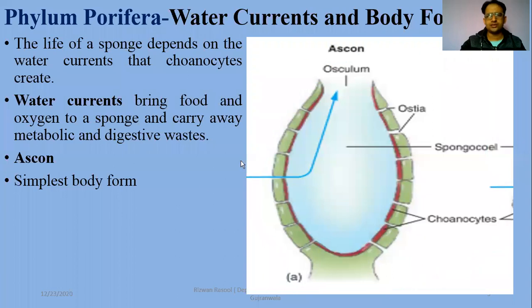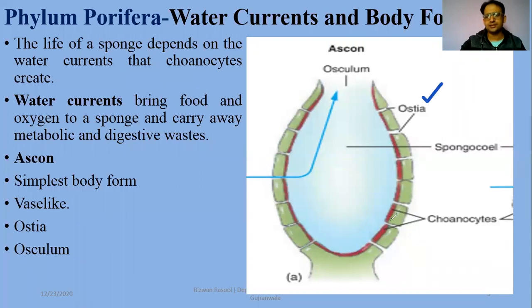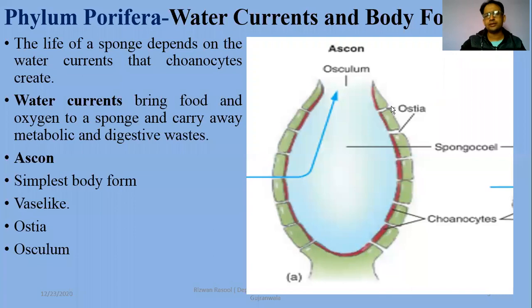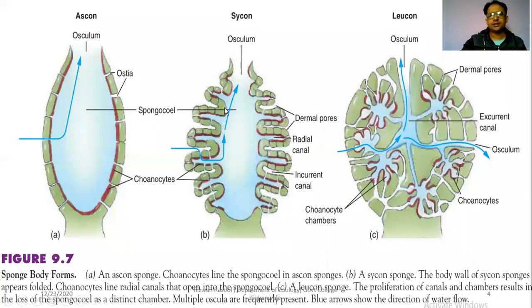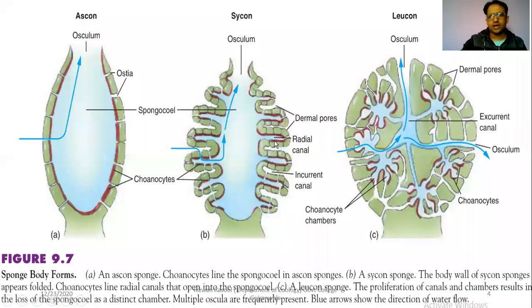In the Ascon type, the inlet pores are named ostia. There are multiple ostia which serve as inlet pores, and the cavity in the body is the spongiocele — the central cavity. It is very prominent in the sac-like structure. The spongiocele is very prominent in the Ascon body form.